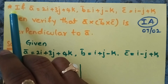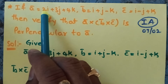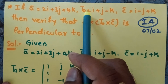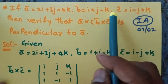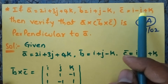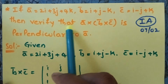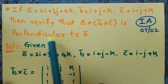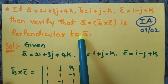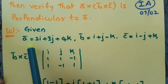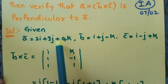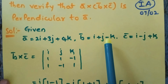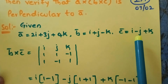Next, the question is: if A bar equals 2i plus 3j plus 4k, B bar equals i plus j minus k, C bar equals i minus j plus k. Then verify that A cross (B cross C) vector is perpendicular to A bar. Given vectors are A bar: 2i plus 3j plus 4k, B bar: i plus j minus k, C bar: i minus j plus k.